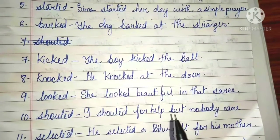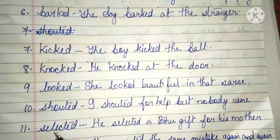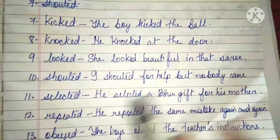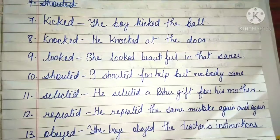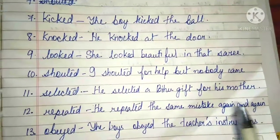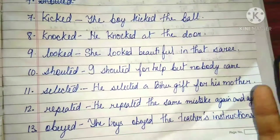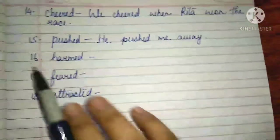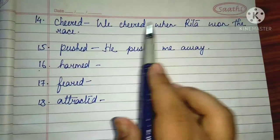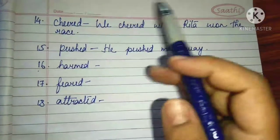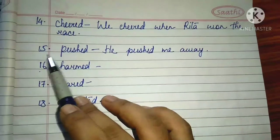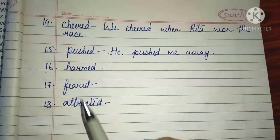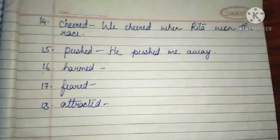Number 10 — 'shouted': 'I shouted for help but nobody came.' Number 11 — 'selected': 'He selected a Bihu gift for his mother.' Number 12 — 'repeated': 'He repeated the same mistake again and again.' Number 13 — 'obeyed': 'The boys obeyed the teacher's instruction.' Number 14 — 'cheered': 'We cheered when Rita won the race.' Number 15 — 'pushed': 'He pushed me away.' Numbers 16, 17, 18 you will make sentences by yourself and show me.